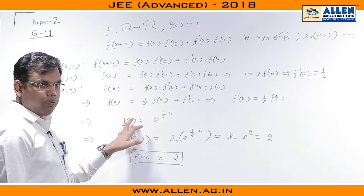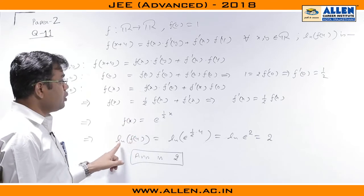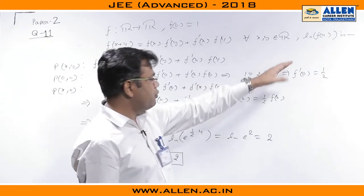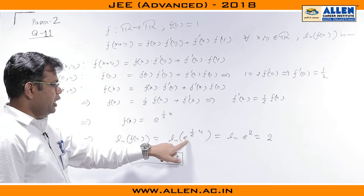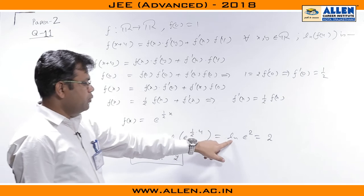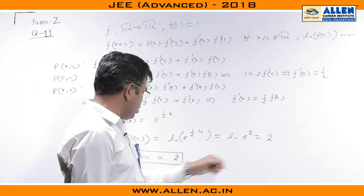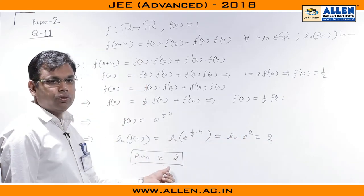Plug x equal to 4 in the expression. We need to calculate ln(f(4)). So just plug x equal to 4. ln(f(4)) equal to ln(e^(4/2)) which gives ln(e²), that is 2. The final answer of this integer type problem is 2.